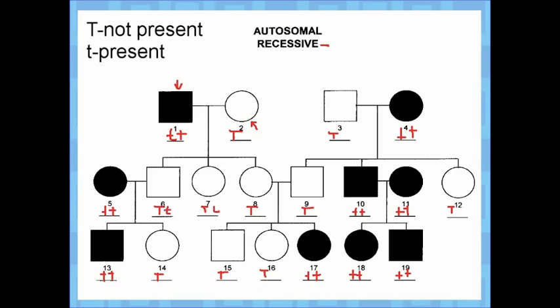The same logic applies for number eight. Going down to number 14, the only place a big T could have come from is parent number six, and the only thing parent number five could have contributed is a little t. Go ahead and try to finish this up yourself, and I'm going to move on to the next pedigree.